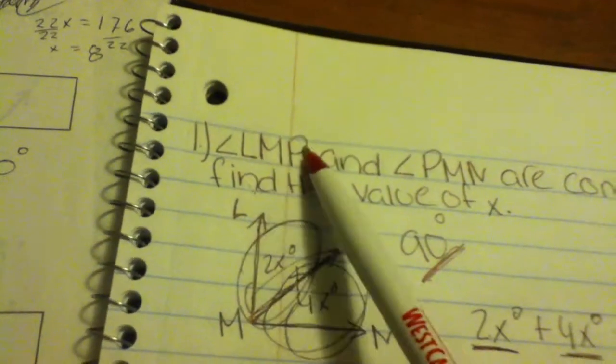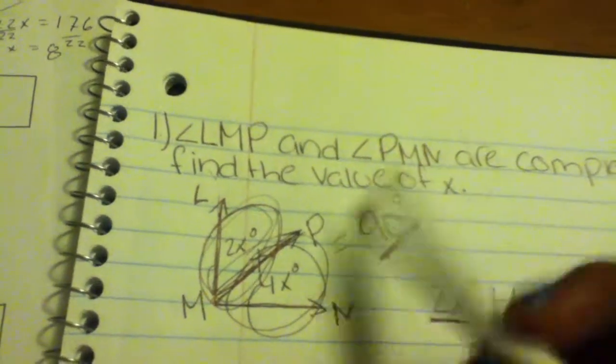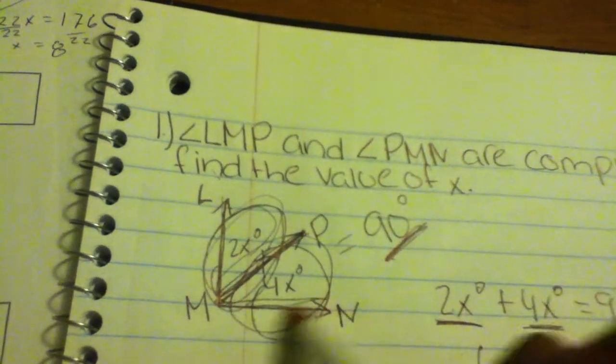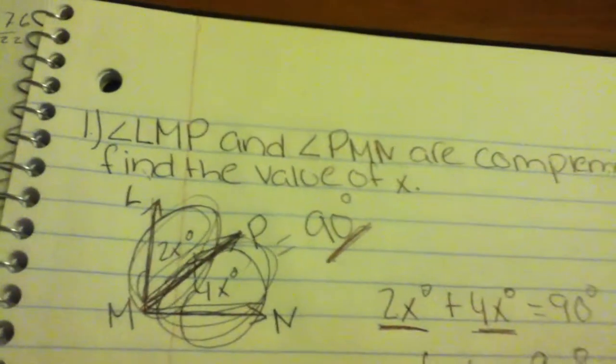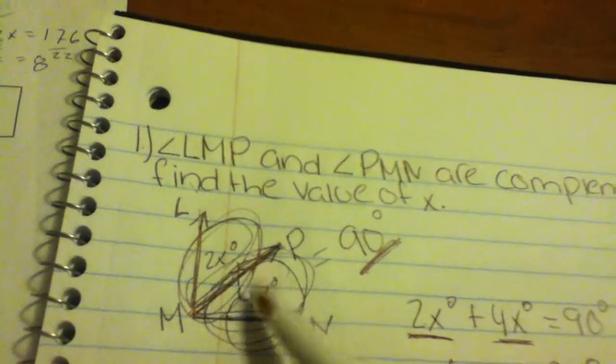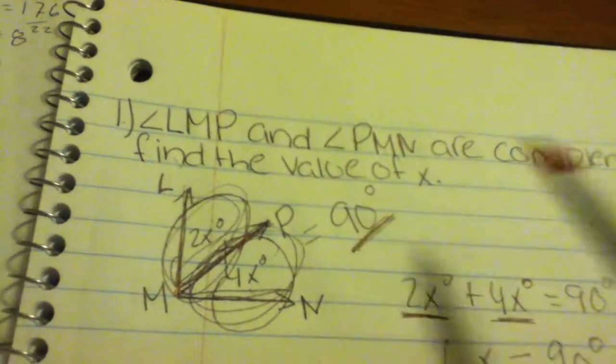Angle LMP, this angle right here, and angle PMN, this angle right here, are complementary angles. So it means if you add them both together you get 90 degrees.